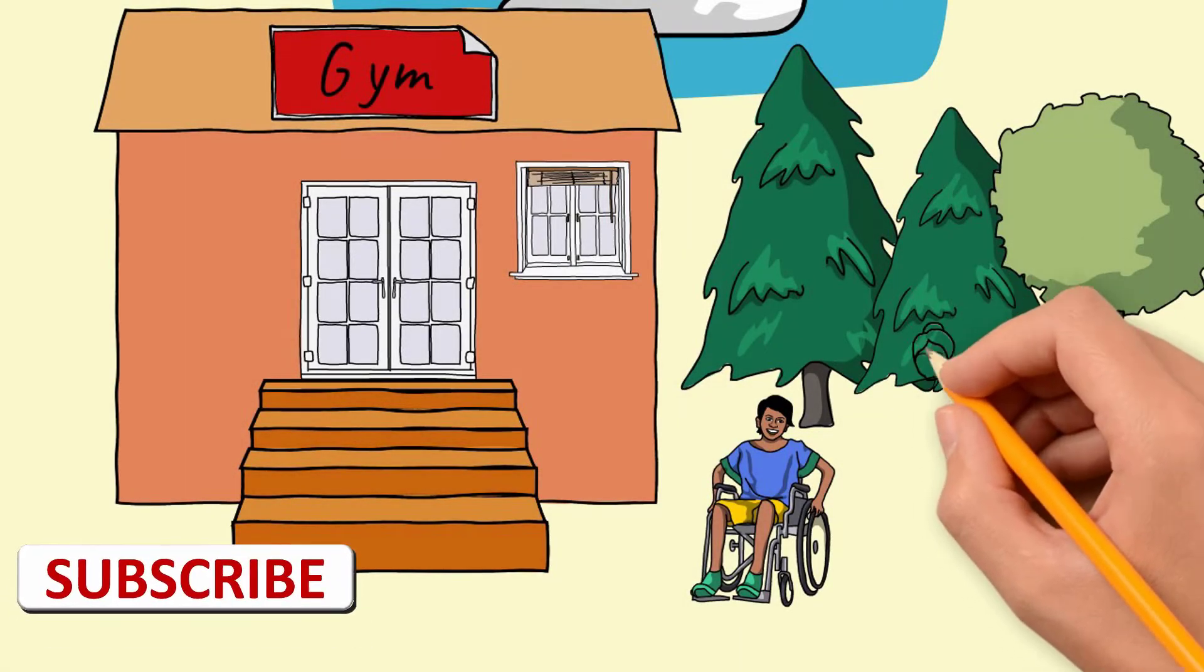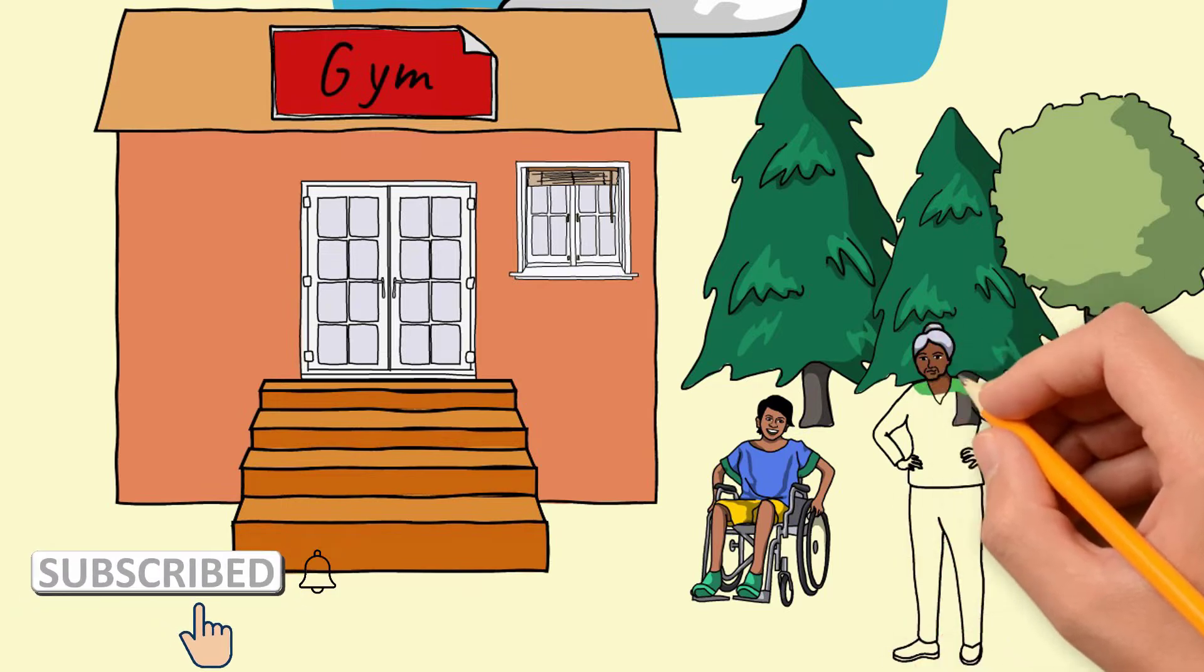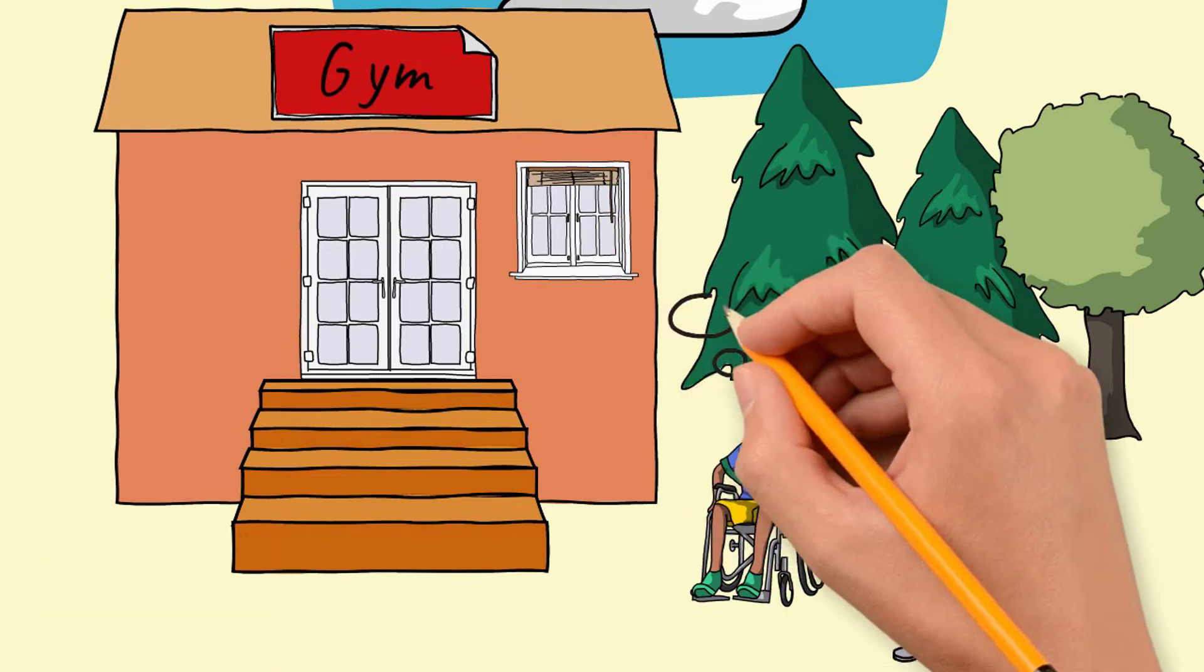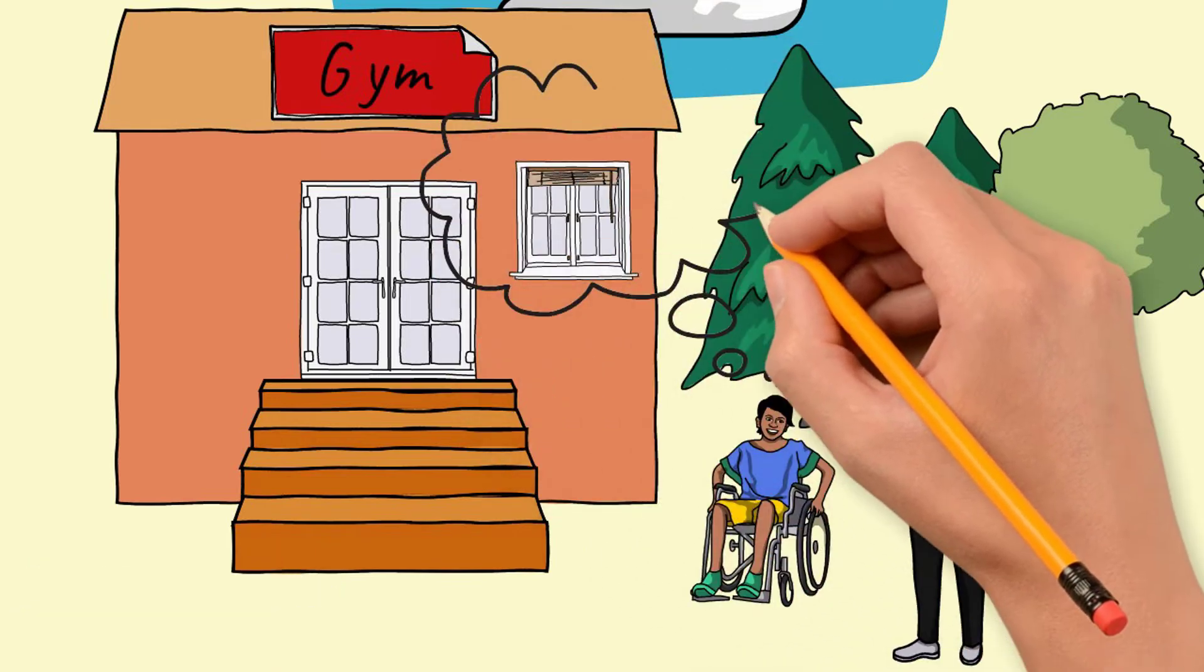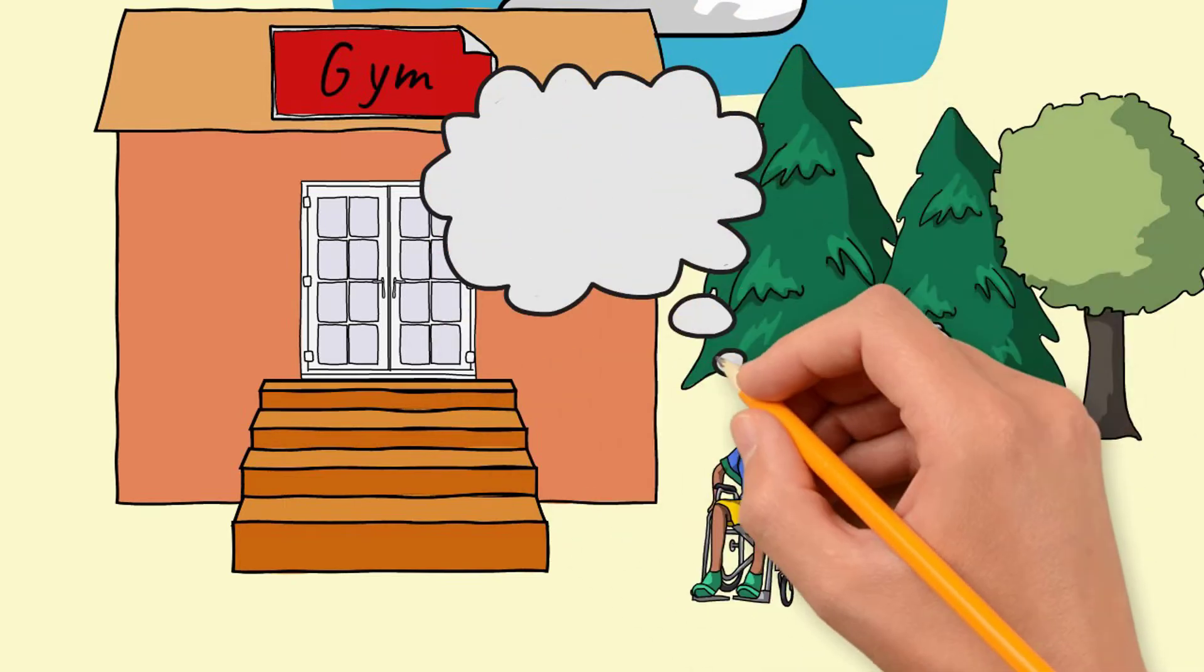Explain the problem to the gym manager. The manager suggested that they were going to help him get up and down the stairs. Kevin thought for a moment. He realized that it wasn't a permanent solution and had to find another better way.